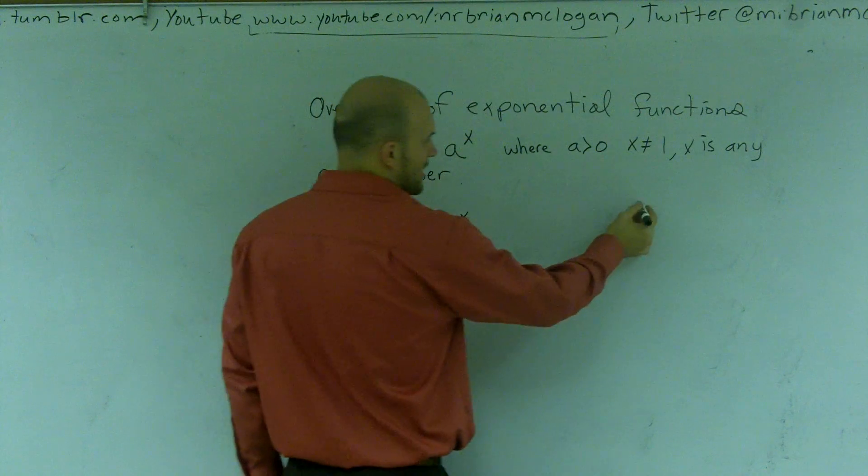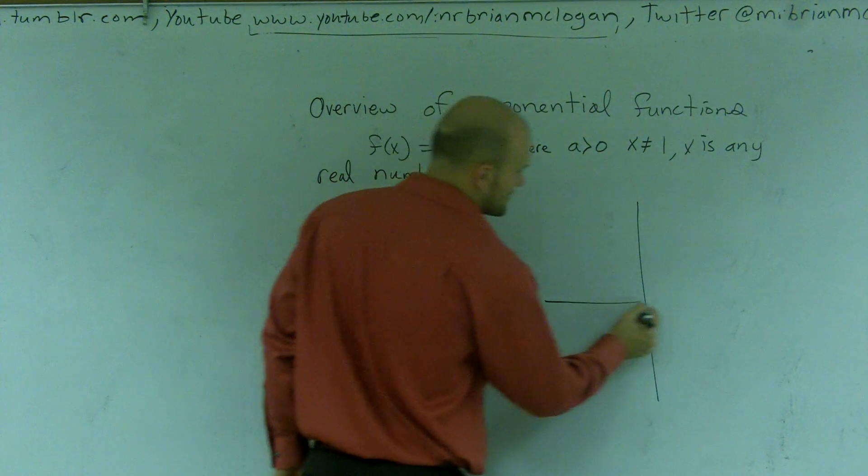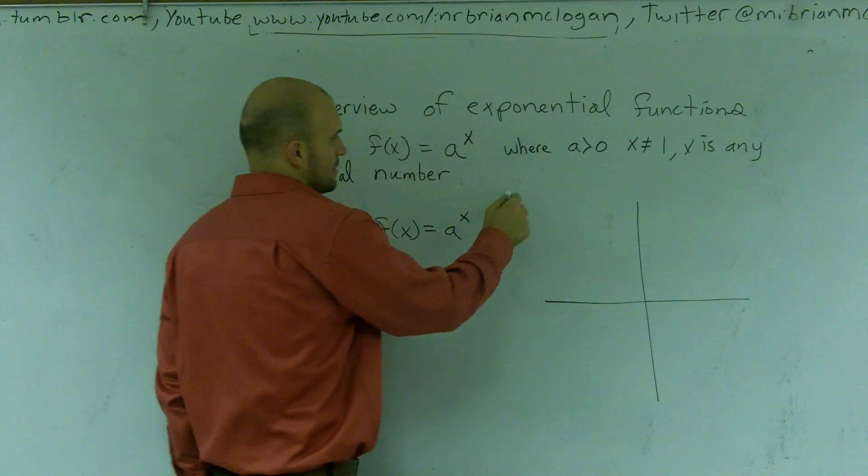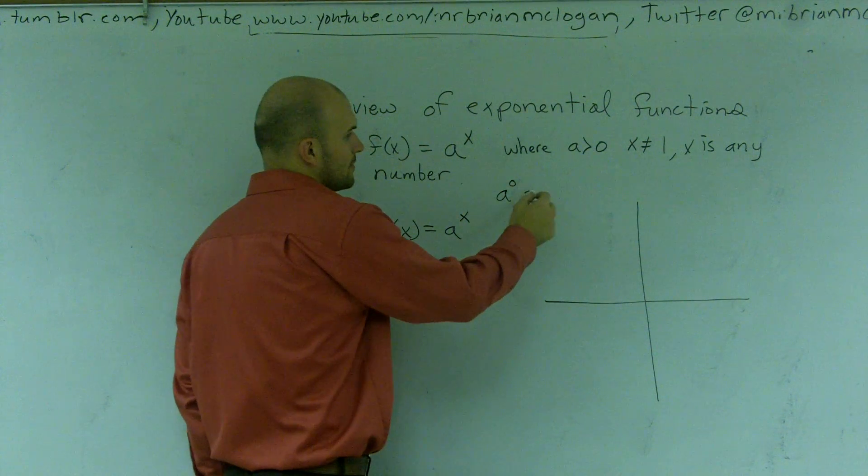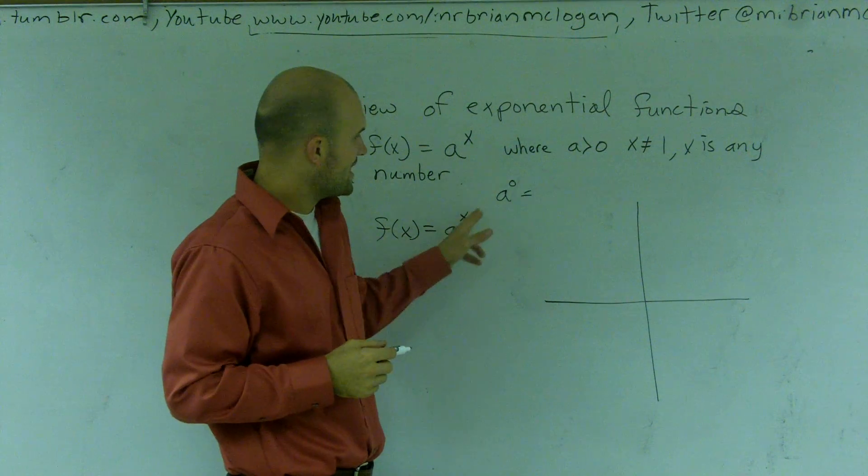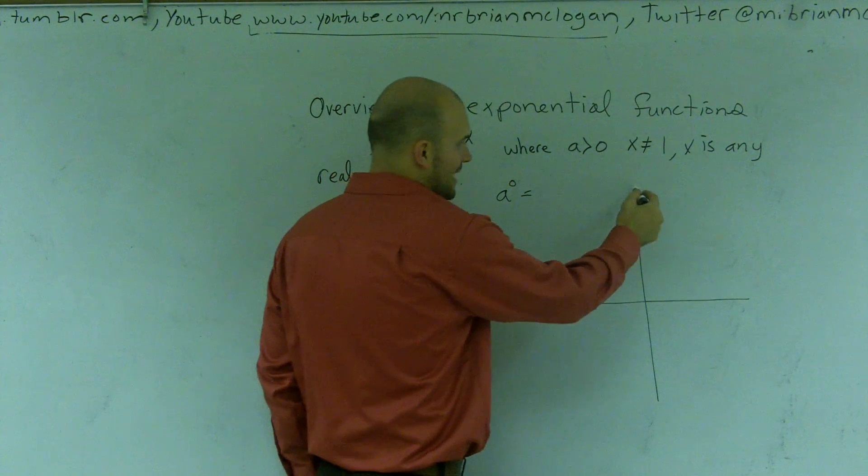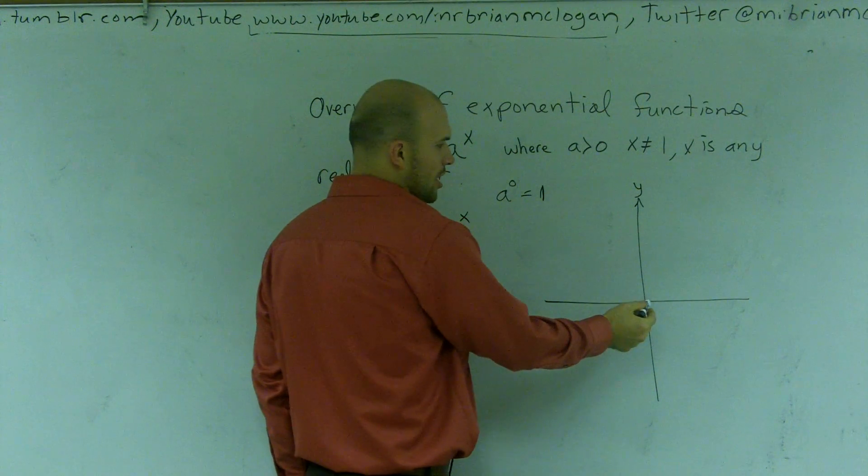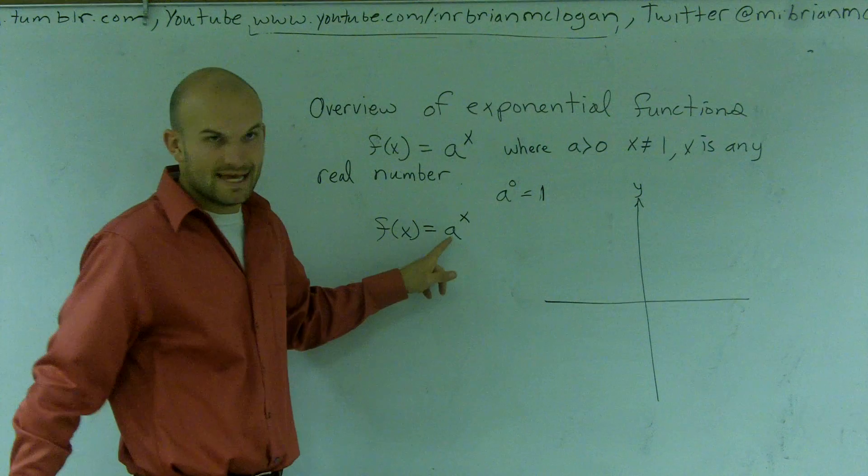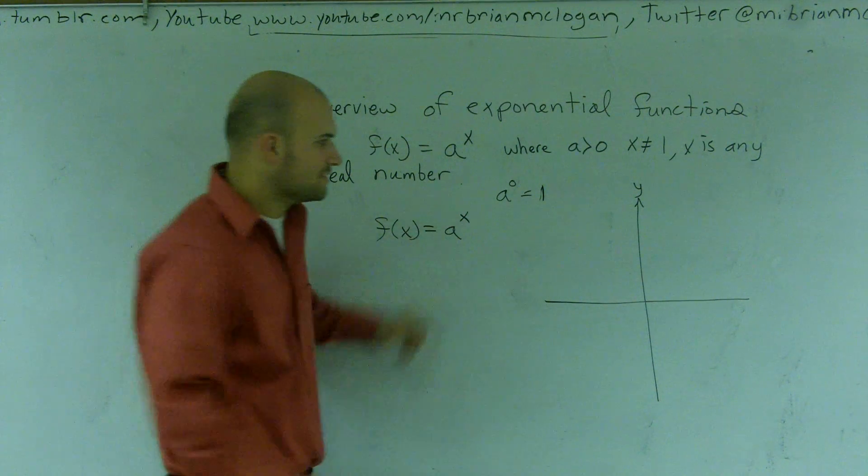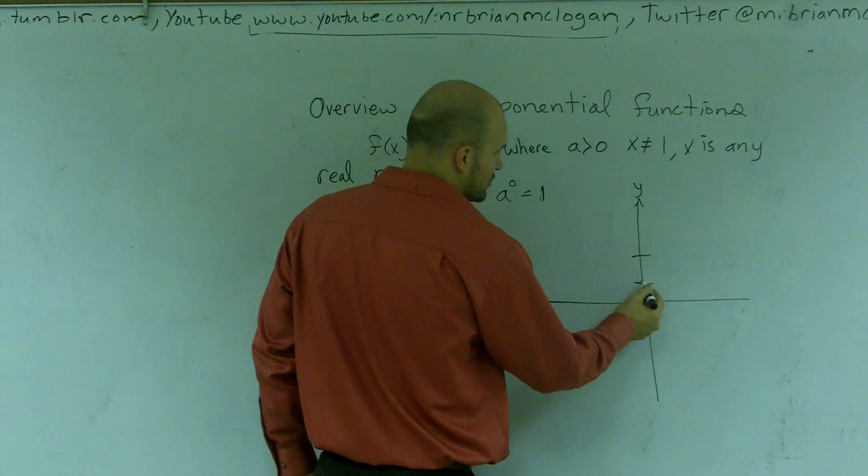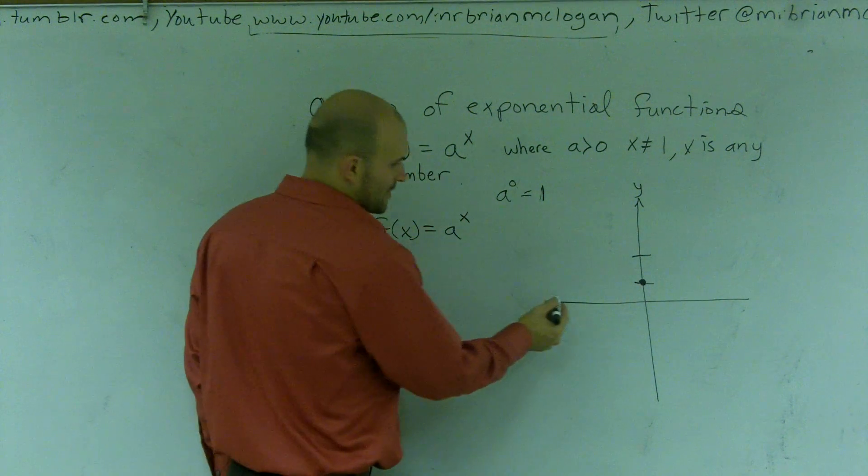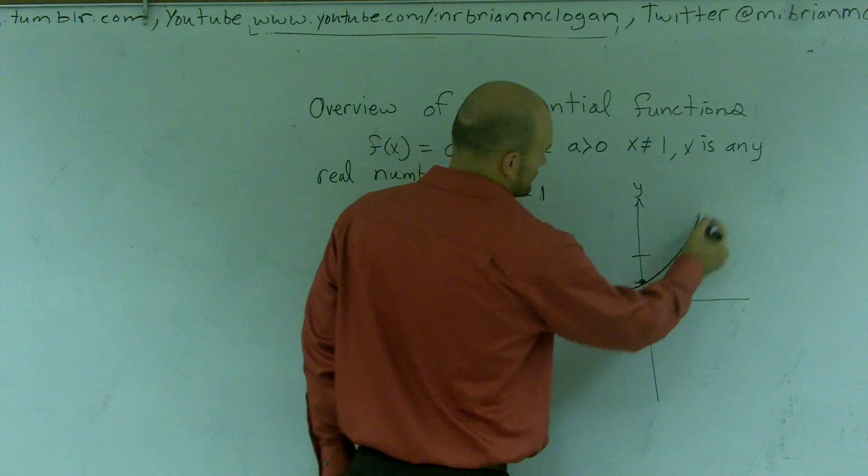And let's look at the parent graph. If I'm going to graph this, there's something that's going to be really important. If x is equal to 0, a raised to the 0 power, that means on my y-axis, if x equals 0, we know it's always going to equal 1. So it doesn't matter what my a is, every single one of those graphs are going to cross at this point.